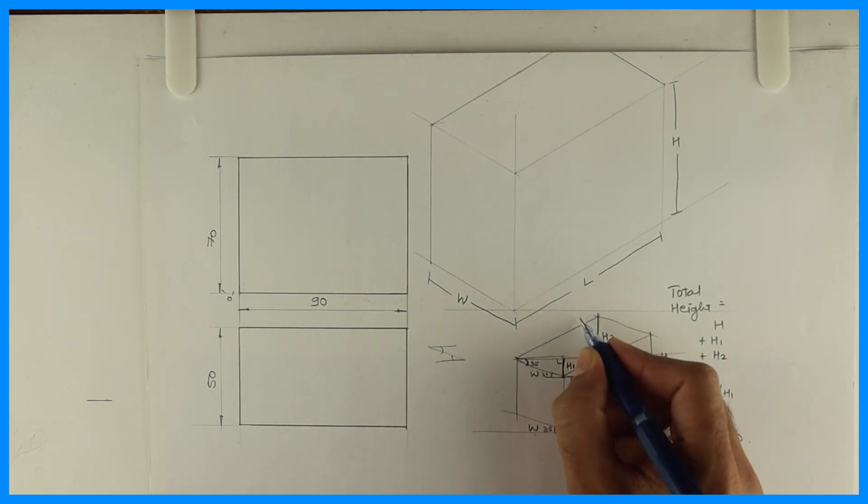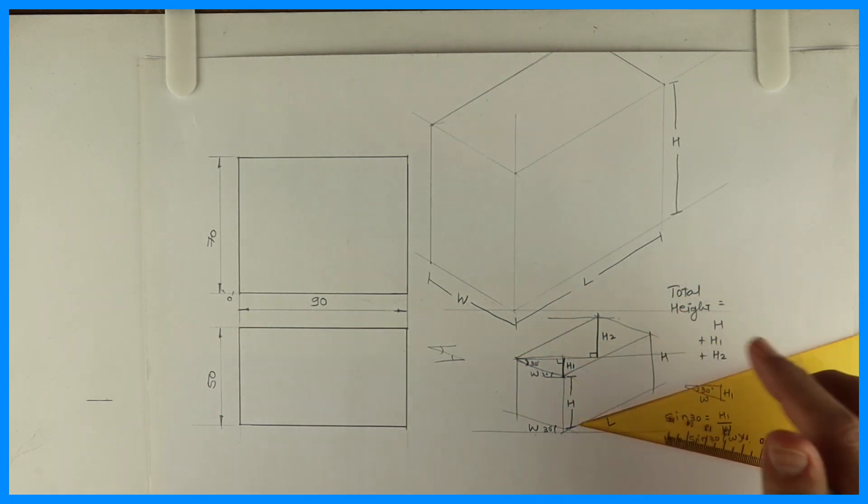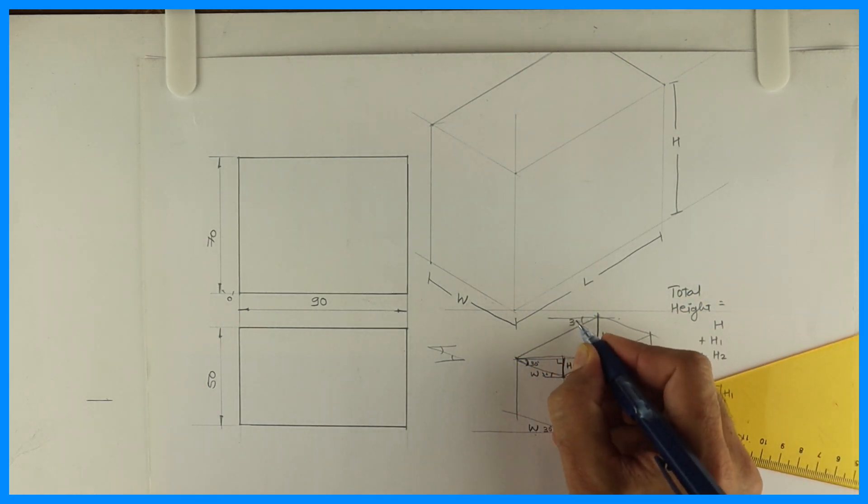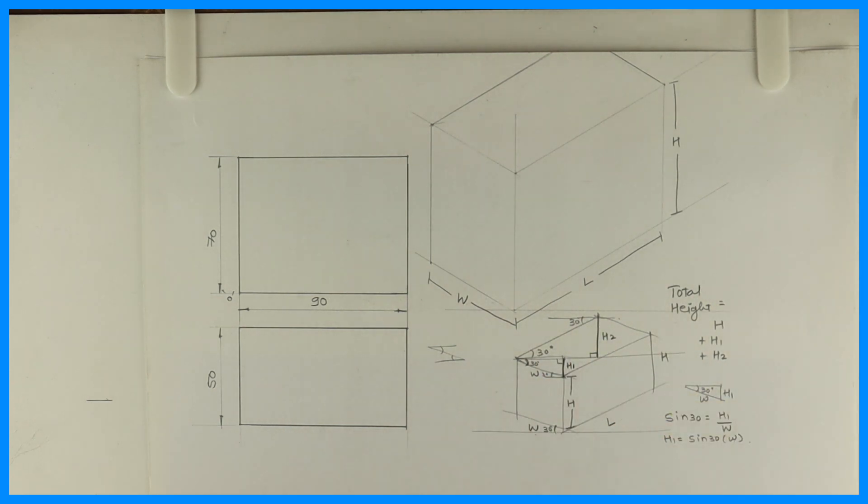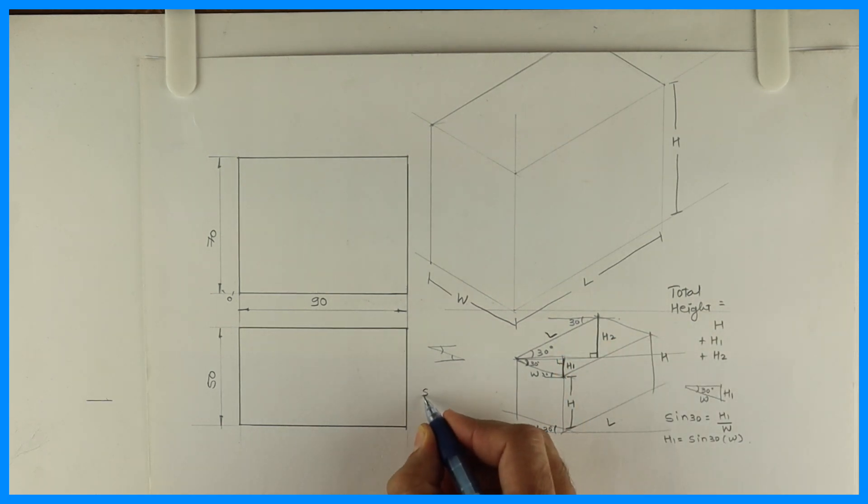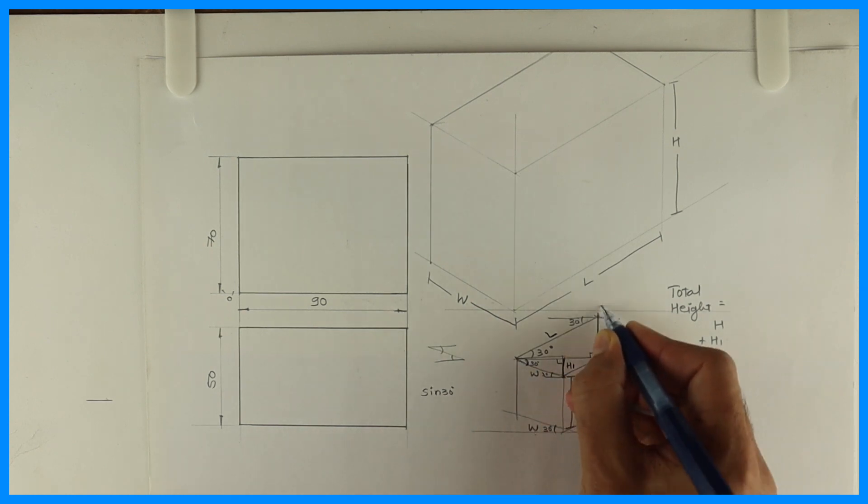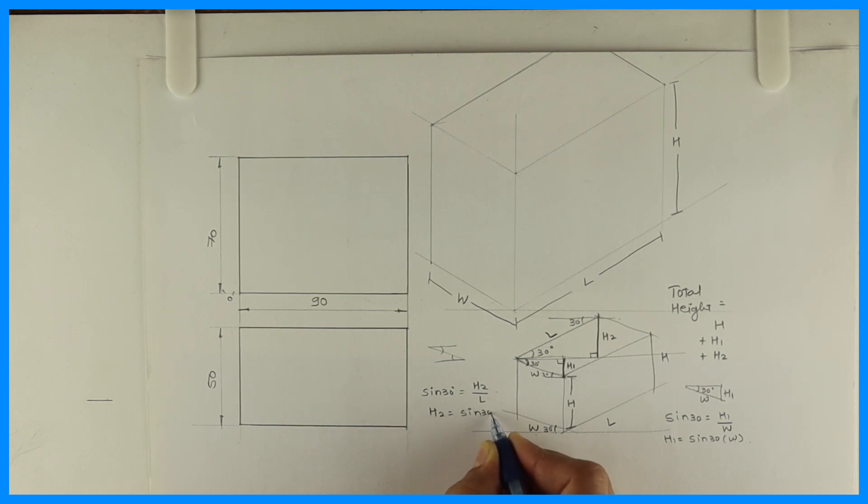Now H2. See now, this angle is also 30. When you draw, see this. This is 30. So this will be 30 according to Z angle. This is L. So sine 30 is equal to H2 upon L. So H2 equals sine 30 into L.